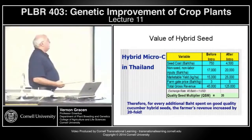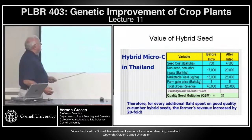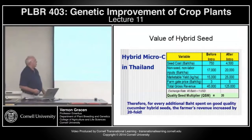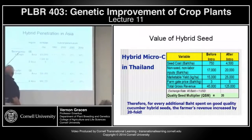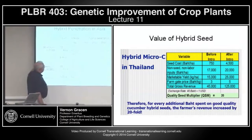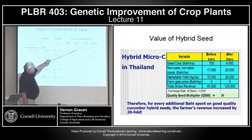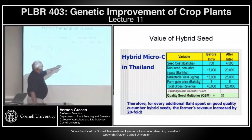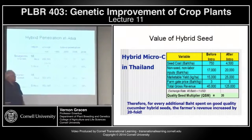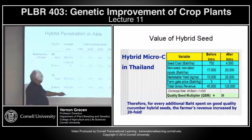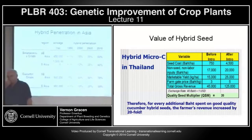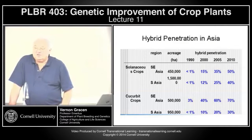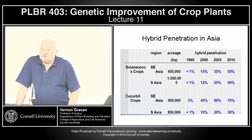Looking at figures like that, you can see what's happening to hybrid penetration in Asia. In the 1990s, almost no hybrids were grown. By 2000, depending on solanaceous or cucurbit crops in Southeast or South Asia, penetration was 15%, 12%, 12%, 40%, and 10%. By 2005, hybrids had expanded to 35%, 25%, 60%, and 20%. Projections for 2010 were 50%, 40%, 70%, and 30%.